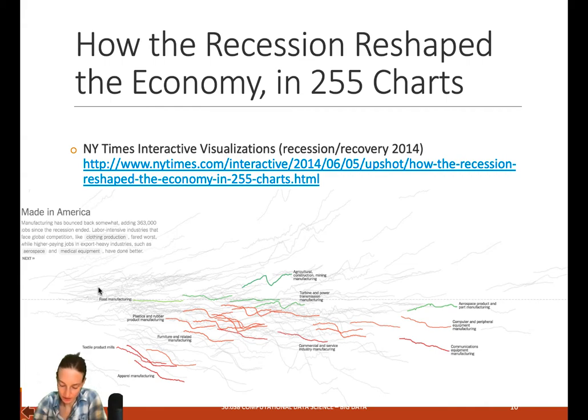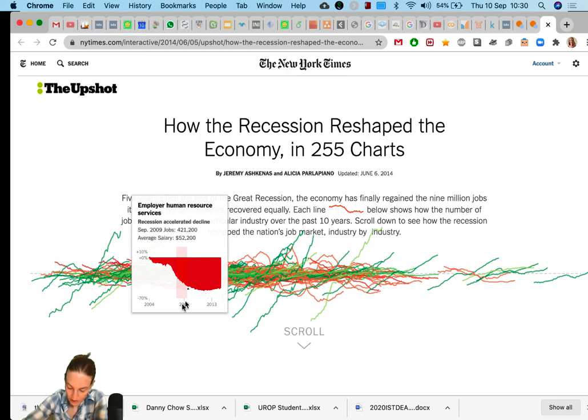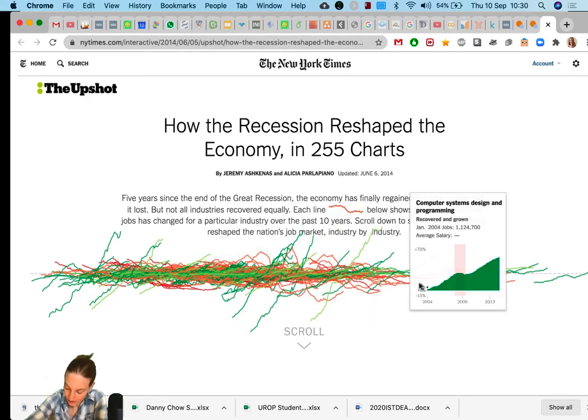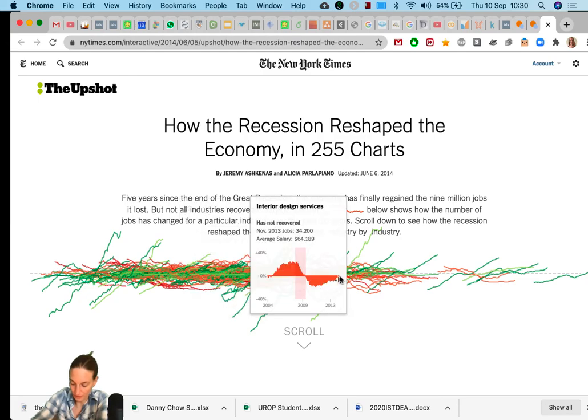Here's another famous demonstration from the New York Times. This is the recession recovery of 2014. It says five years since the end of the Great Recession, the economy has finally regained the nine million jobs it lost. Each line shows how the number of jobs has changed for a particular industry over the past 10 years. Each of these lines are sectors. This is a very interesting graph because it shows you so much information again on one graph, which is what we're aiming to do.